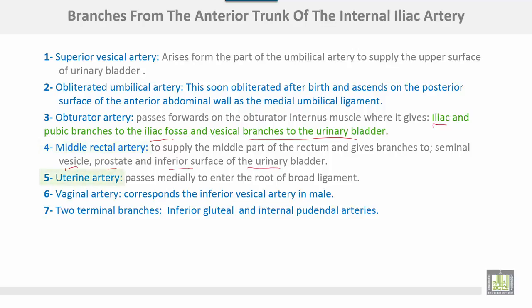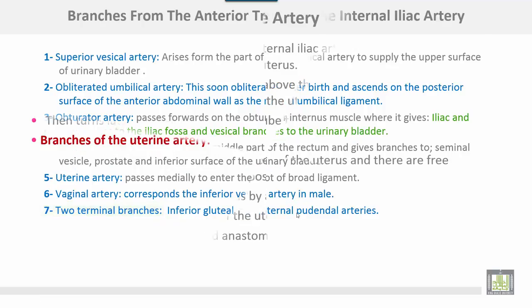The uterine artery in females passes medially to enter the root of the broad ligament, and will be discussed later in detail. The vaginal artery corresponds to the inferior vesicle artery in the male. The two terminal branches of the anterior division are the inferior gluteal and internal pudendal arteries.